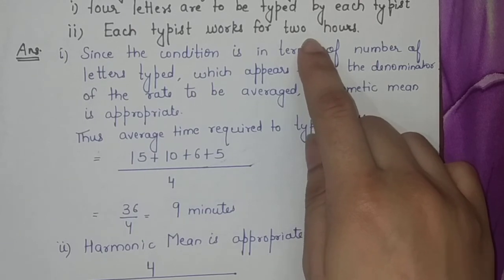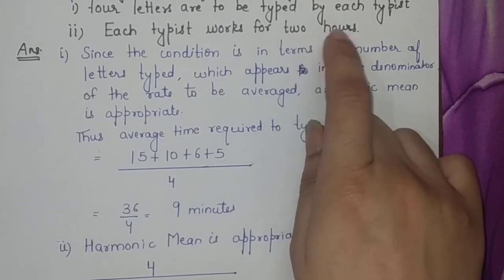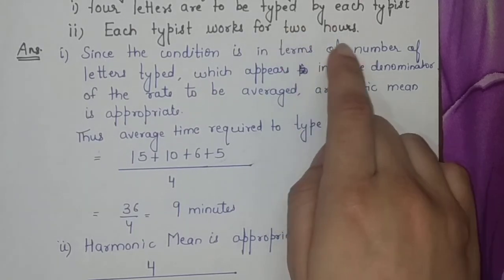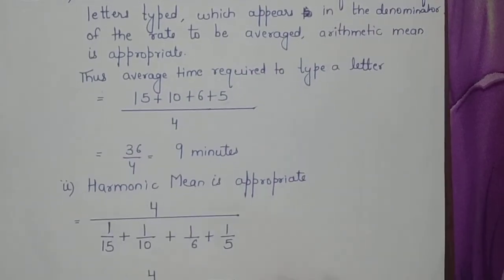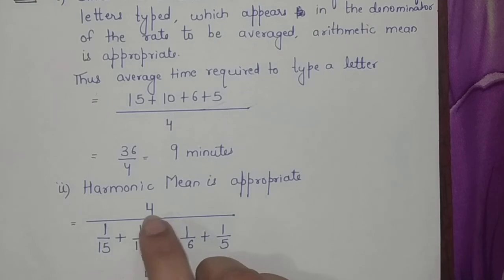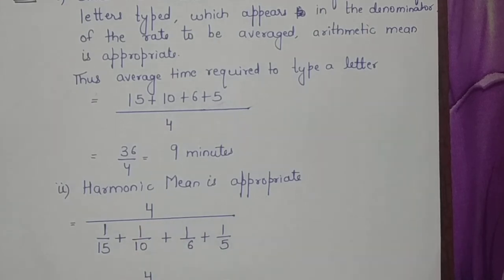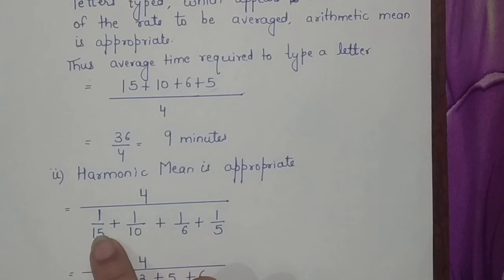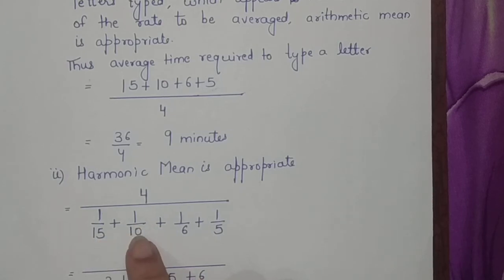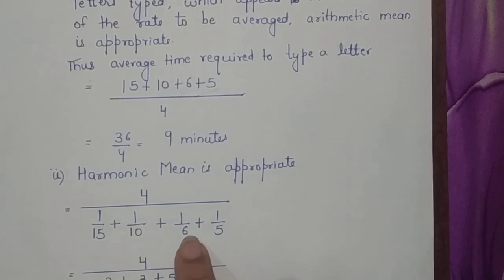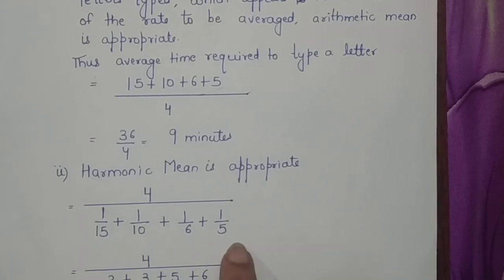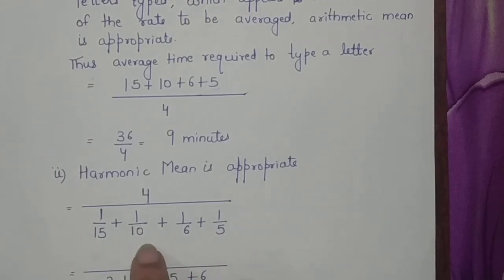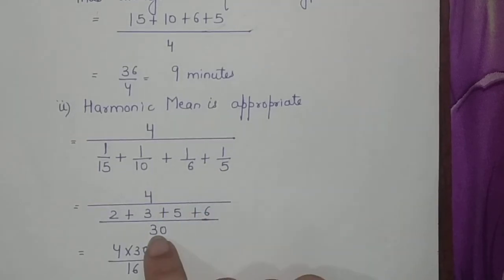But if we talk about every typist will work for two hours, so here two hours same time for each typist. Basically there are four typists and what is the X? 15 minutes for first typist, 10 minutes for second typist, 6 minutes for the third typist, and 5 minutes for the fourth typist. We will do the reciprocal of all of these: 1 by 15, 1 by 10, 1 by 6, and 1 by 5. We will find the LCM which will be 30.